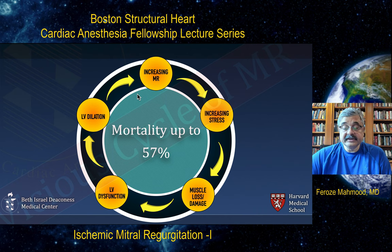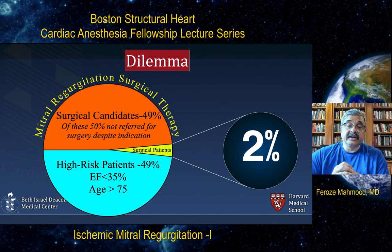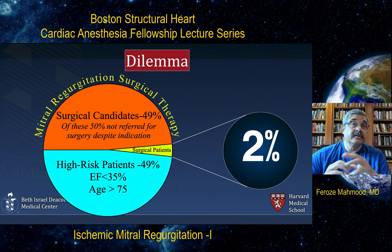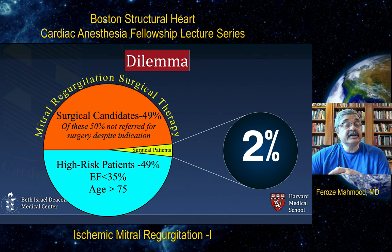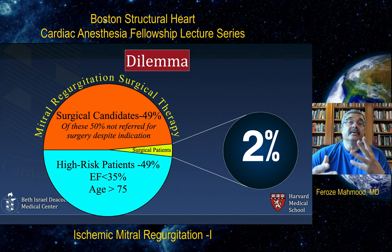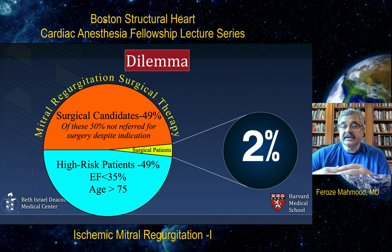Another startling statistic is that of all patients who have mitral regurgitation, only about 2% of those with moderate to severe mitral regurgitation are selected for mitral valve interventions. About 50% of patients with moderate to severe mitral regurgitation don't even get subscribed to mitral valve surgery because of prohibitive risk or comorbidities. This is a huge problem likely to grow over time as the population ages.